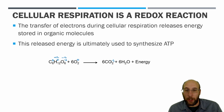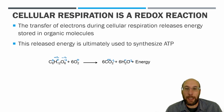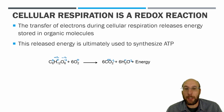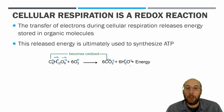In CO₂, with two oxygens at −2 each, carbon must be +4 to give a net zero. In water, oxygen is −2 and each hydrogen is +1. So carbon went from an oxidation state of zero in glucose to +4 in CO₂ — it lost electrons and was oxidized. Oxygen went from zero to −2 — it gained electrons and was reduced.